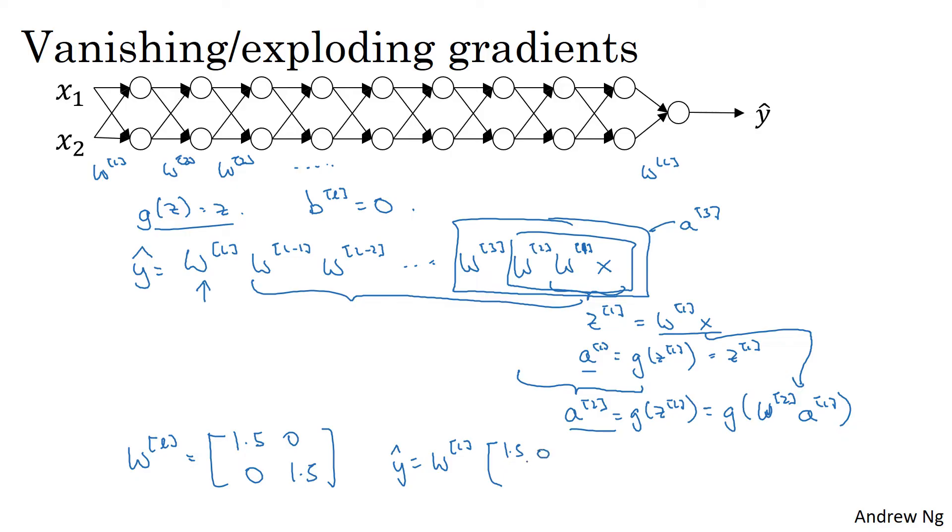Then y hat will be, ignoring this last one which is a different dimension, this [1.5, 0; 0, 1.5] matrix to the power of L-1 times x, because if we assume that each one of these matrices is equal to this thing, it's really 1.5 times the identity matrix, then you end up with this calculation. And so, y hat will be essentially 1.5 to the power of L-1 times x.